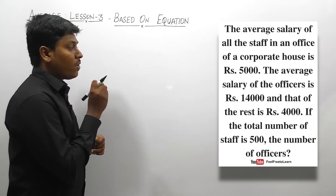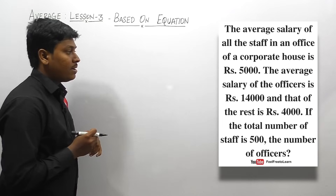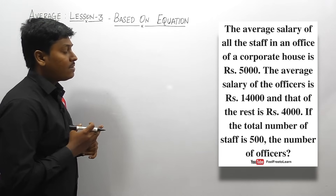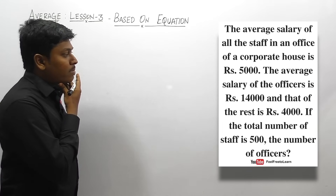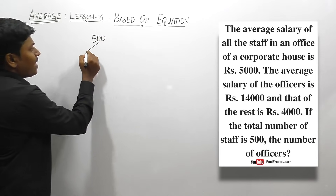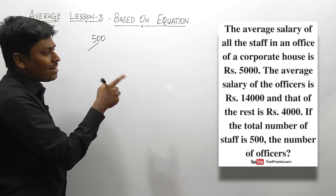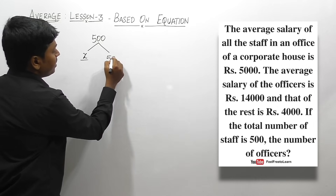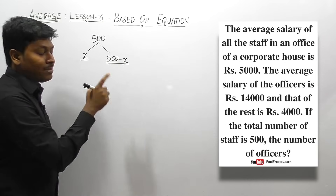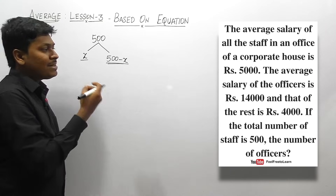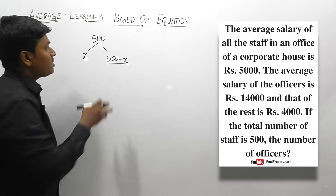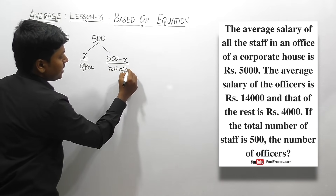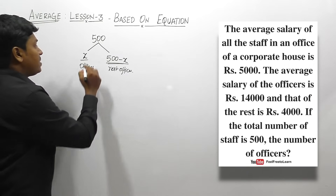Question number five: the average salary of all staff in a corporate house is Rs. 5,000. The average salary of officers is Rs. 14,000 and that of the rest is Rs. 4,000. If the total number of staff is 500, find the number of officers. Let x be the number of officers and the remaining 500 minus x will be the rest. Our target is to find the value of x.